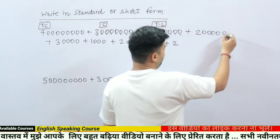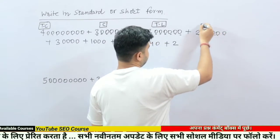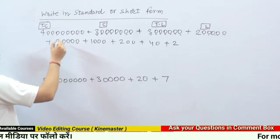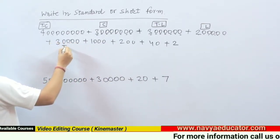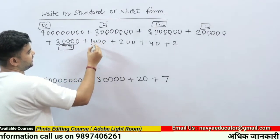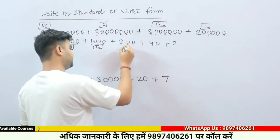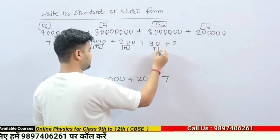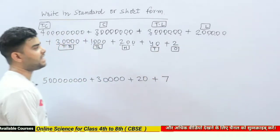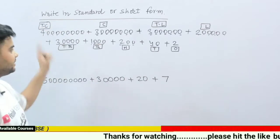Continuing: the next number — ones, tens, hundreds, thousands, ten thousands, lakh — so its place value is lakh. The next is ten thousand, then thousand, then hundred, then tens, and finally ones. So now I have found the place of each digit in the expanded form.